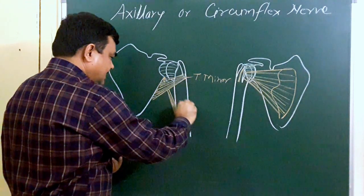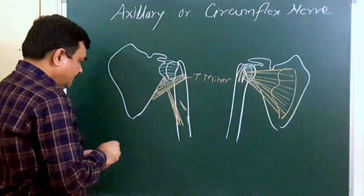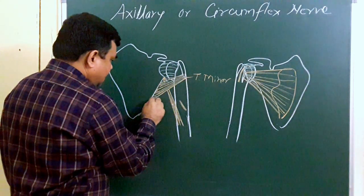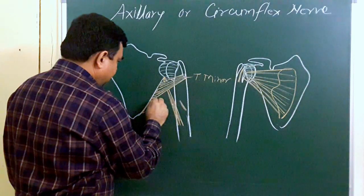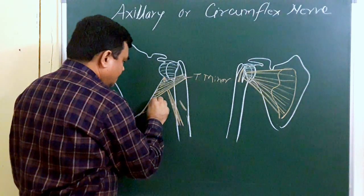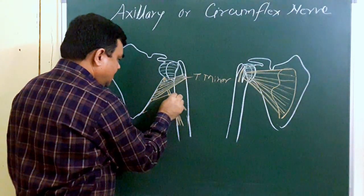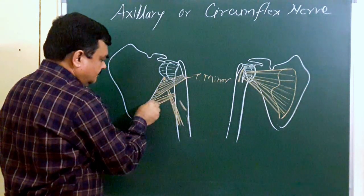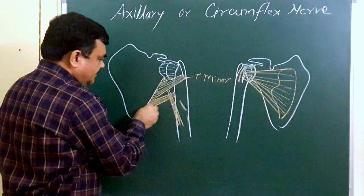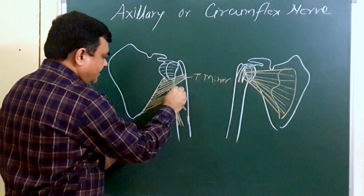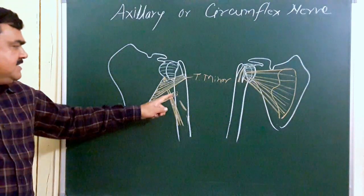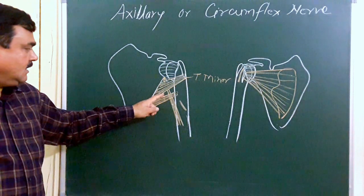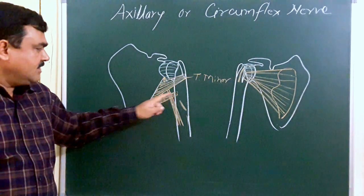Here is the lateral head of triceps. The muscle is inserted on the medial lip of the triceps groove on the posterior aspect. In this diagram, this is the quadrangular space, this is the upper triangular space, and this is the lower triangular space.